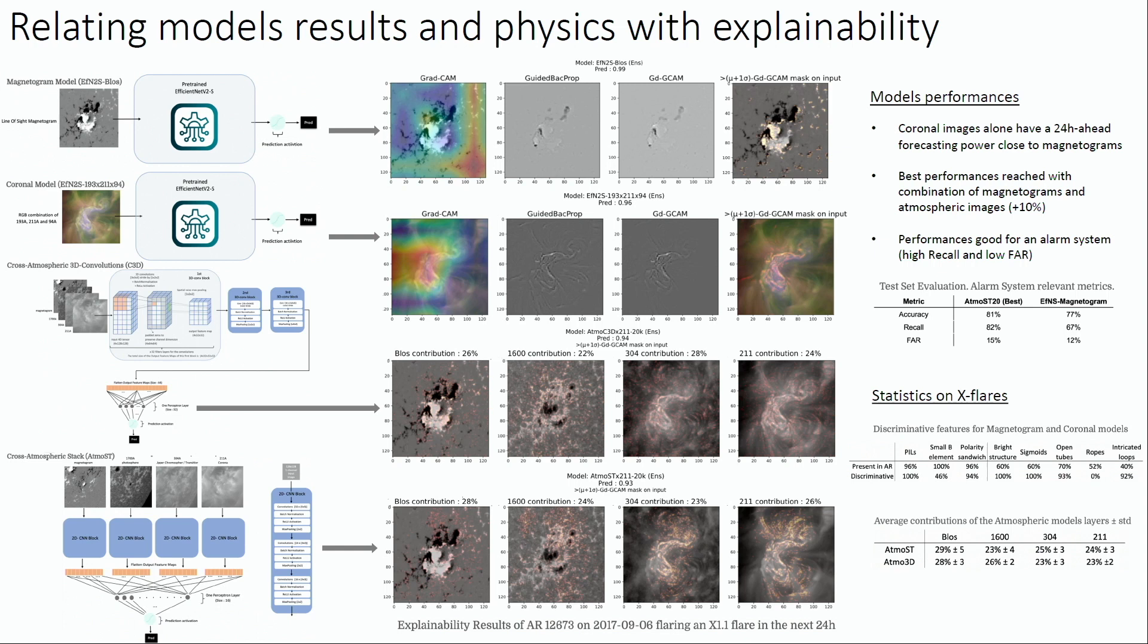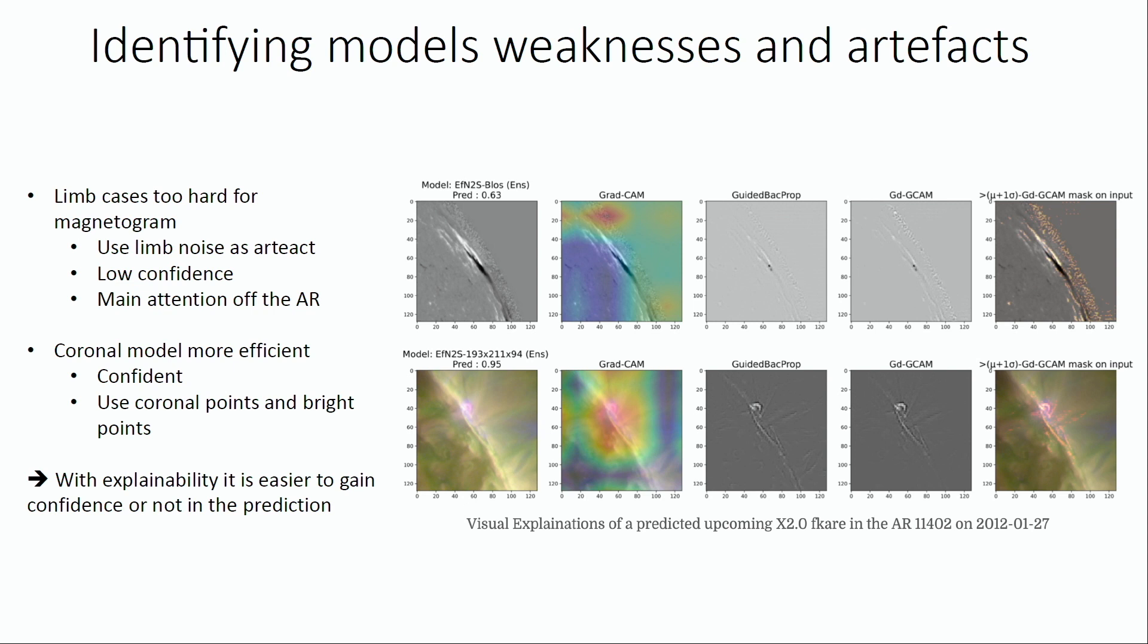And next, we can also use them to identify artifacts and model weaknesses, for instance, on the limbs for magnetograms. We see it focused mostly on the noise of the limbs, but for the coronal model, it works much better. And that's it.